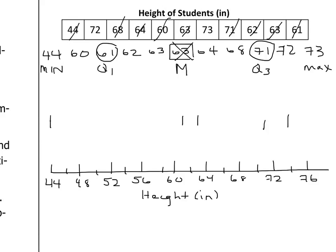So the whisker goes from the minimum to Q1. Maximum to Q3 is the other whisker. Then the remaining lines creates our box.